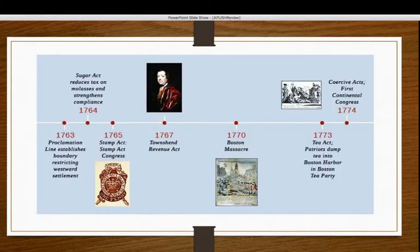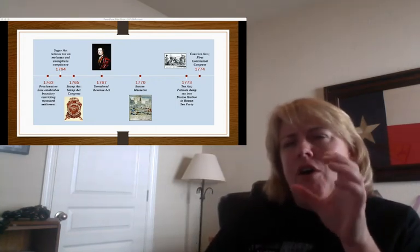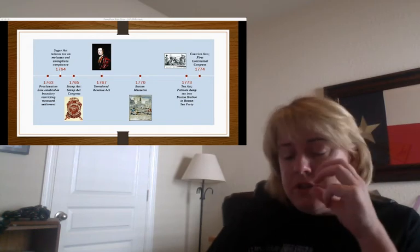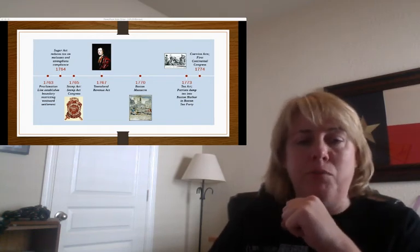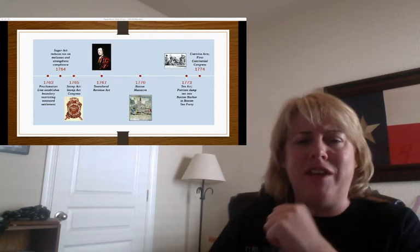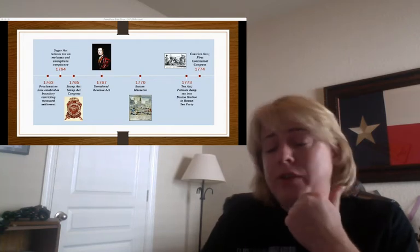When you look at the timeline, it all started in 1763 with the Proclamation Line, and the Coercive Acts are the bookend on the other end. The Coercive Acts only affected the city of Boston, so a lot of the other colonies weren't willing to get behind the idea of revolution — the heartbeat of the revolutionary movement was in Boston. It was difficult to convince other colonies to get involved in a possible war with England when only one city was being affected.